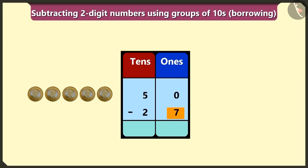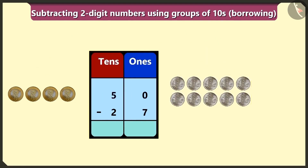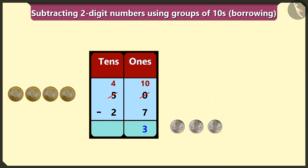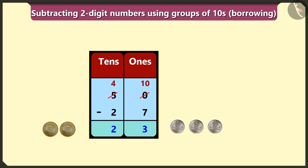We cannot subtract 7 from 0 in the box of ones, so we borrow 1 ten from neighbour 5 in the place of tens. We write 10 ones in the place of ones and 4 tens instead of 5 in the tens box. Subtracting 7 ones from 10 ones leaves 1, 2 and 3. Then subtracting 2 tens from 4 tens gives 2 tens. So the milk seller will return 2 tens and 3 ones — 23 rupees.